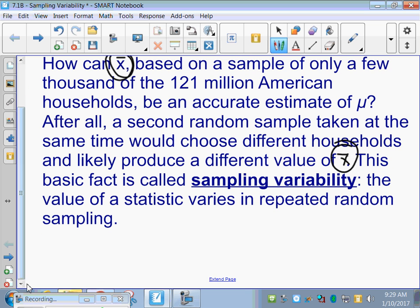So this basic fact is called sampling variability. Write that down. The value of a statistic varies in repeated sampling. You're taking different people or different samples, so you might get a different value for the mean, or we're not always finding the mean. We talked about finding the minimum yesterday.